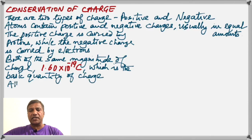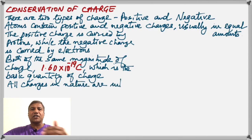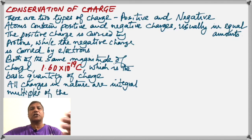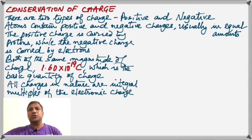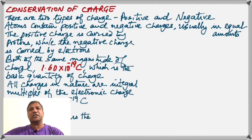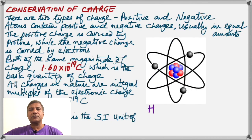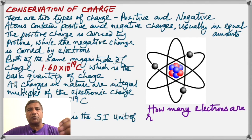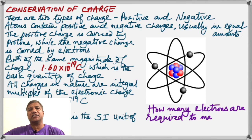Both the proton and electron have a charge of 1.60 times 10 to the negative 19 coulombs. This is the basic quantity of charge, which means all other charges in nature are multiples of this charge. Whenever you charge a material, you cannot remove half of an electron — you have to add or remove a whole number of electrons. This fundamental electronic charge of 1.60 times 10 to the negative 19 coulombs is very important, and the coulomb is the SI unit of charge.